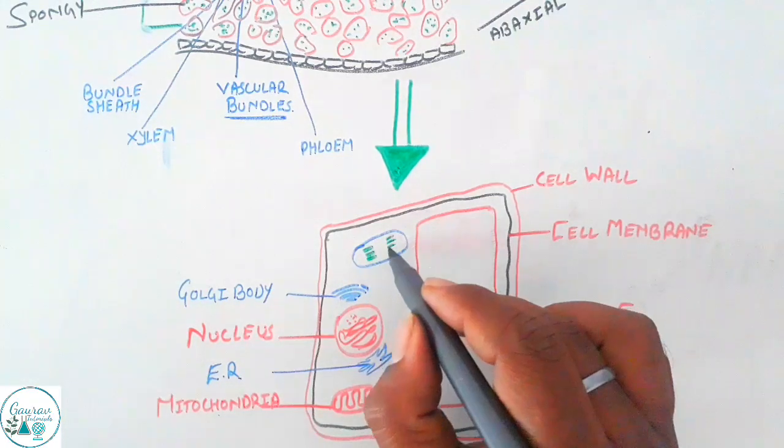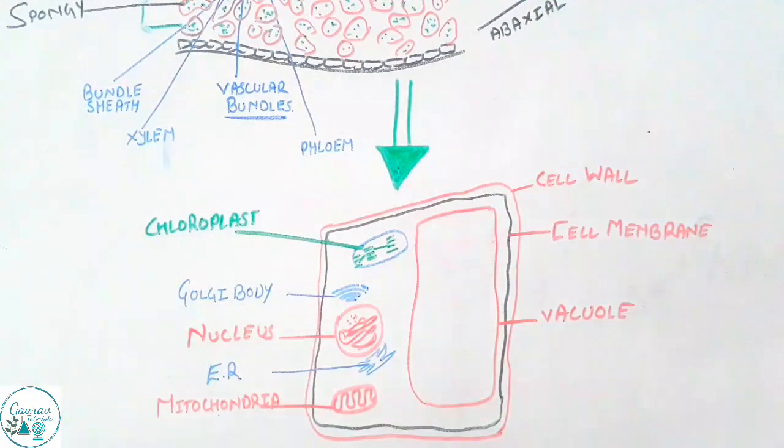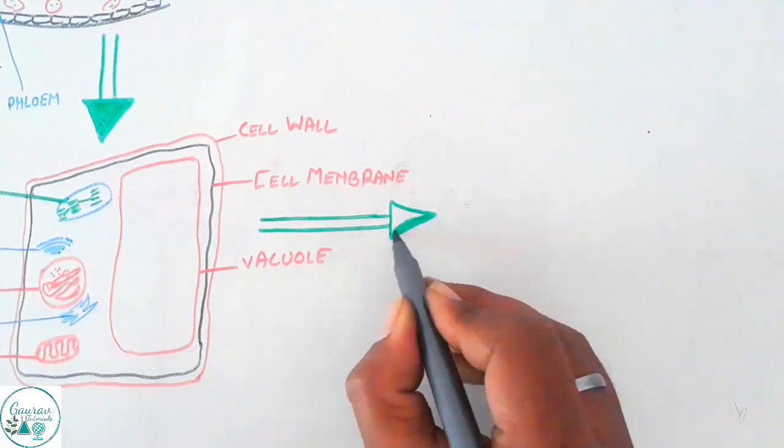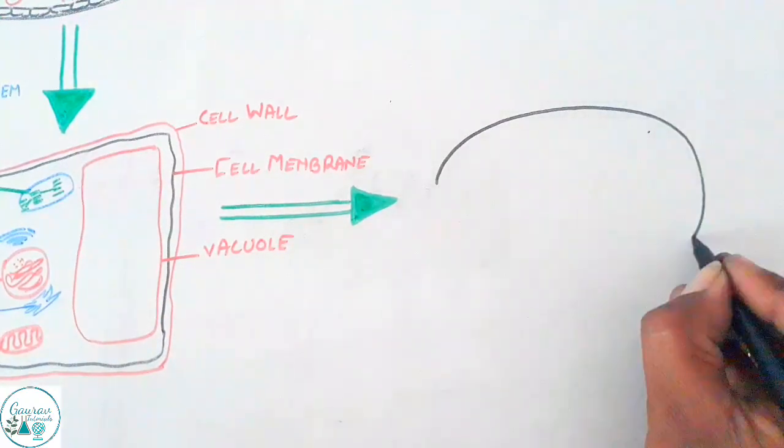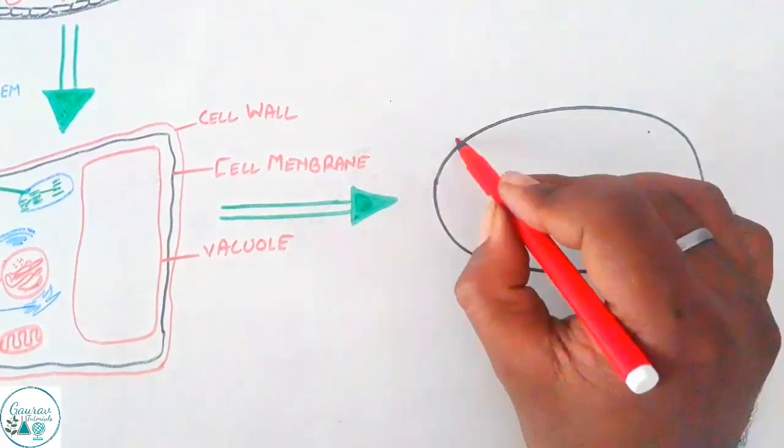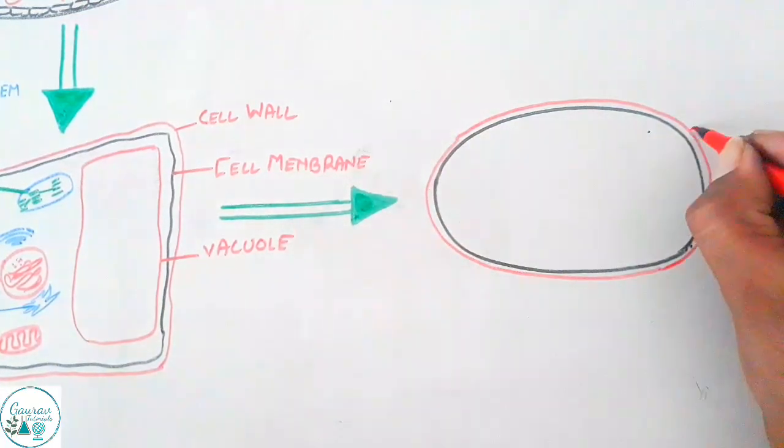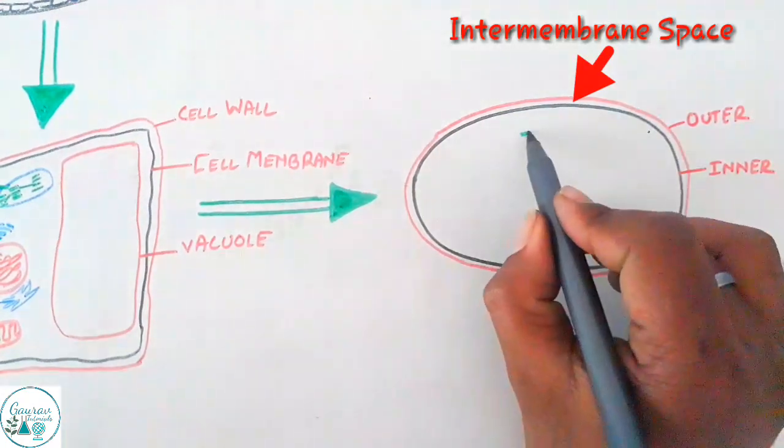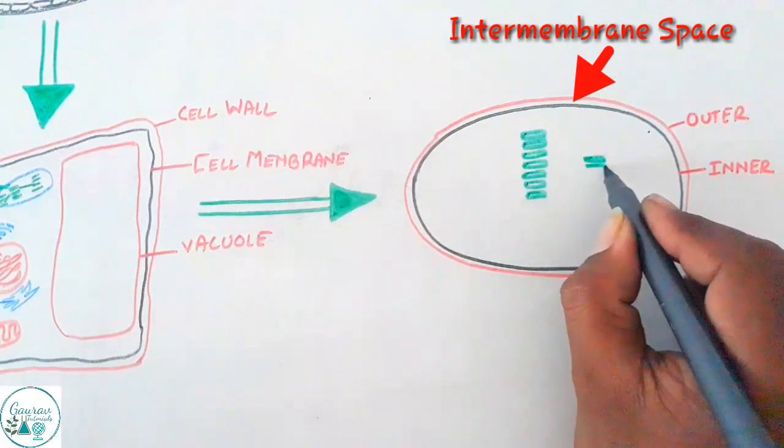Basically a chloroplast is a green colored plastid. The entire process of photosynthesis is completed in the chloroplast itself. Talking about the structure of the chloroplast, chloroplast is a double membrane bound organelle. If we observe the structure we would find there will be an outer membrane, an inner membrane, and an inter membrane space between the two.